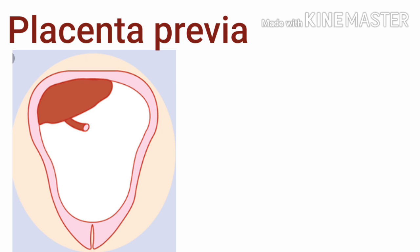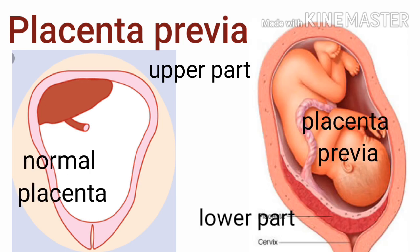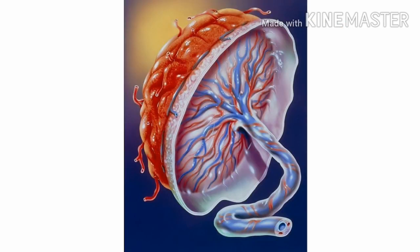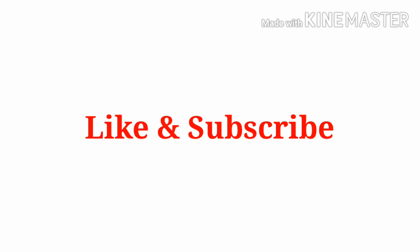The last abnormality is placenta previa. Usually the placenta is attached in the upper part of the uterus, but in this case it is attached in the lower portion of the uterus. That's all about placental abnormalities. We have covered different types today, and this topic has been asked many times in university examinations. Soon we will meet with umbilical cord abnormalities. If you like the video, please don't forget to like and support. Thank you.